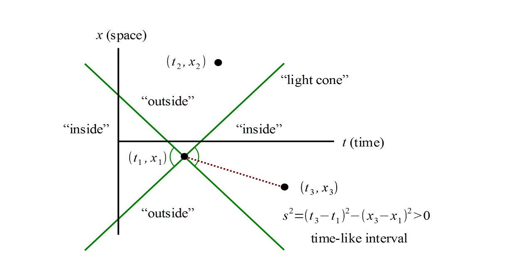As we showed in video 8, s squared is the square of the difference of the time coordinates minus the square of the difference of the space coordinates.